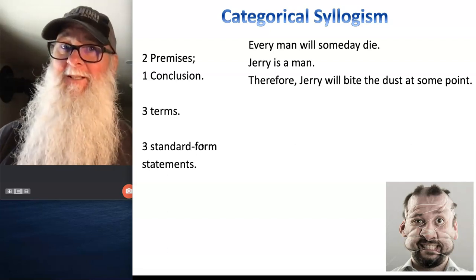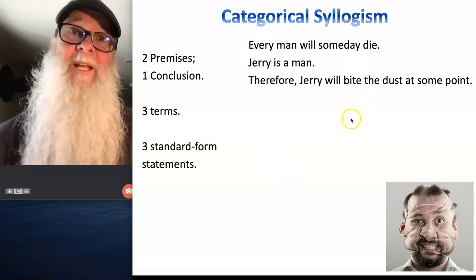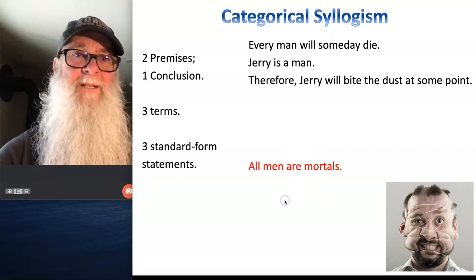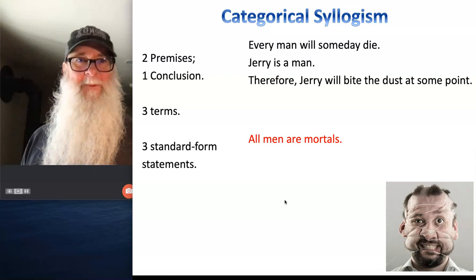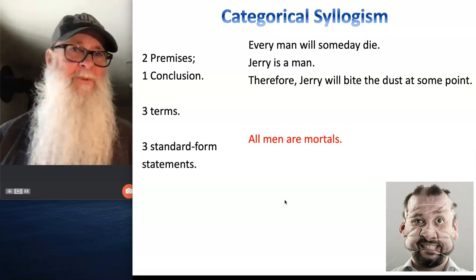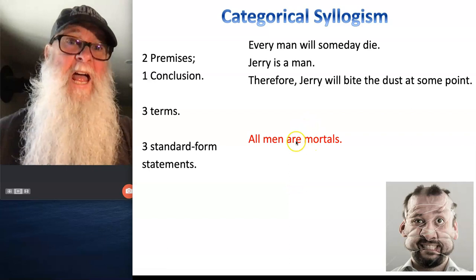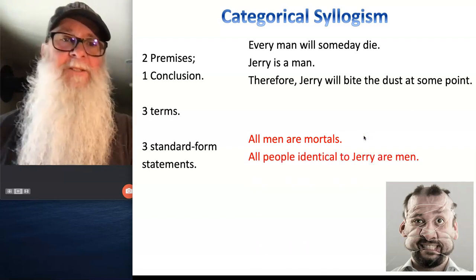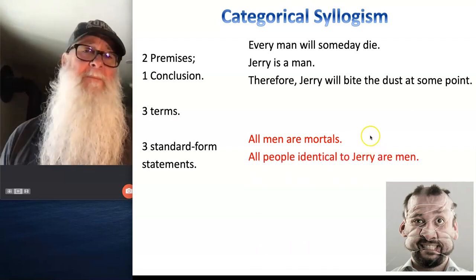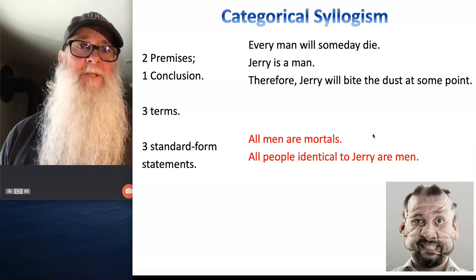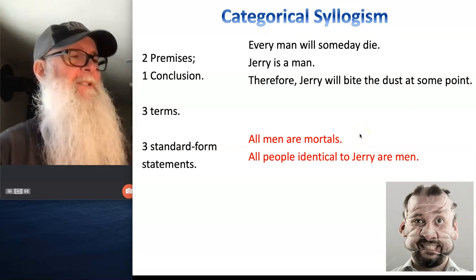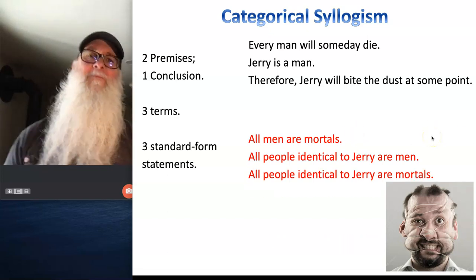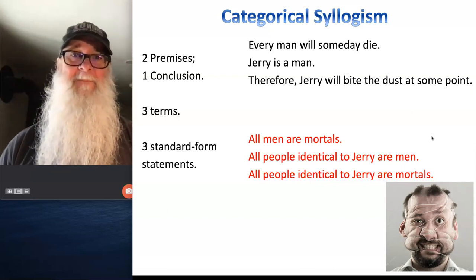So the question is: how do you express 'every man will someday die' as a standard form categorical statement? Did you say 'all men are mortals,' or 'all men are people who will die,' or 'all humans are people who will die'? Something like that — rockstar. How about 'Jerry is a man'? How do we translate that? All people identical to Jerry are men, or people, or human — whatever term you want to select. And 'Jerry will bite the dust at some point' sounds like slang for Jerry's going to die. So: all people identical to Jerry are mortals, or all people identical to Jerry are people who are going to die. Rock on.